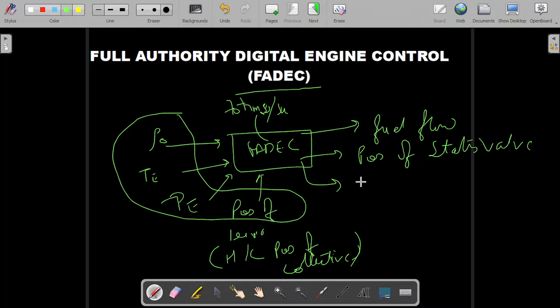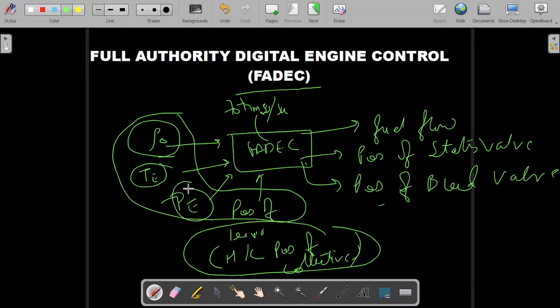It ensures the position of bleed valve and a few more. FADEC receives signals from various sensors according to the load, the position of the collective lever, the density of the air outside, and the temperature and pressure of the engine. It computes them and accordingly ensures the fuel flow and the positions of stator valve and bleed valve.